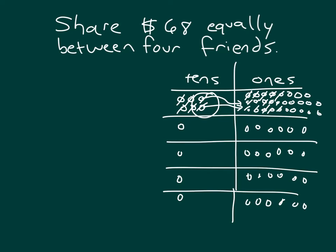28 divided by 4 does give me 7. Those 28 one dollar bills divided by 4 does give me 7 within each of those groups. So within each of the groups, I have 1 ten dollar bill and 7 one dollar bills.